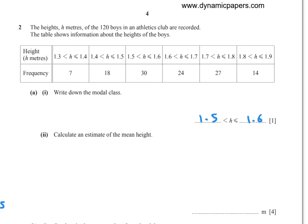Part (ii): Calculate an estimate of the mean height. To find the mean height, find the middle value for each class, multiply by the frequency, then divide by the total frequency. The middle values are: between 1.3 and 1.4 add them and divide by 2, giving 1.35.